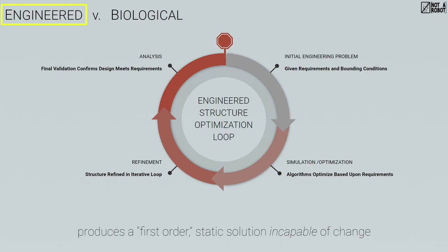I want to talk about engineered versus biological structures. When we talk about biology and nature, there's this iterative loop — biology is ever-changing, evolutionary, it never stays in stasis because it responds to external feedback conditions. In engineering, you have an initial problem — here are my bounding conditions, solve this — and then simulation, optimization, algorithms, design parameterization, maybe machine learning or statistics. There's a refinement section where you further refine based on analysis results, then a final validation confirming you solved the problem.